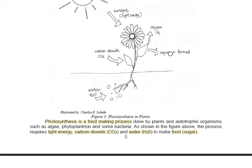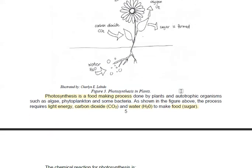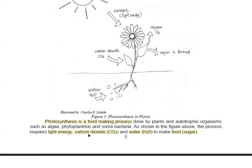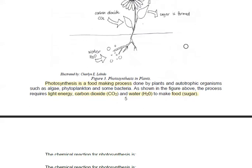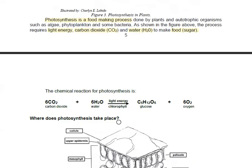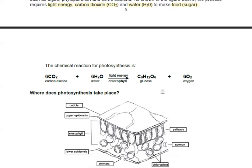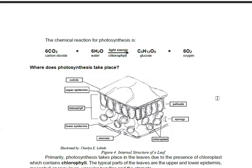So what is photosynthesis? It is a food-making process done by plants and autotrophic organisms such as algae, plankton, and some bacteria. So here, as shown in the figure above, this process requires light energy, carbon dioxide, water to make sugar or food. This is the chemical reaction for photosynthesis.